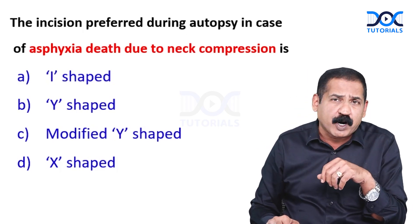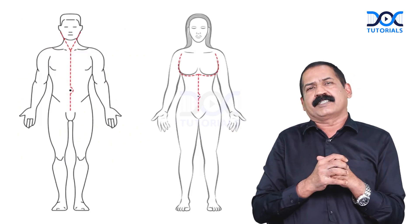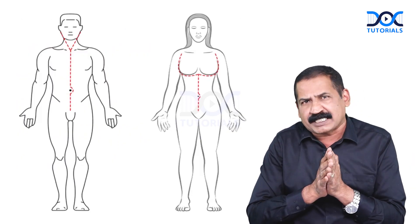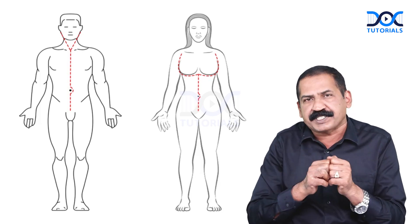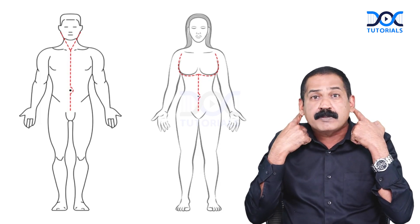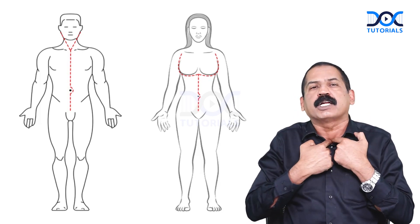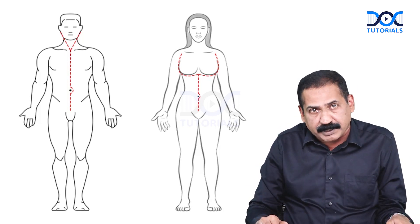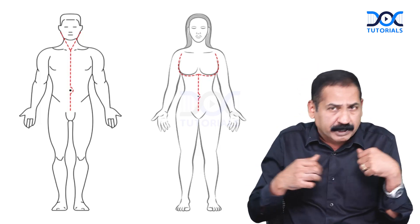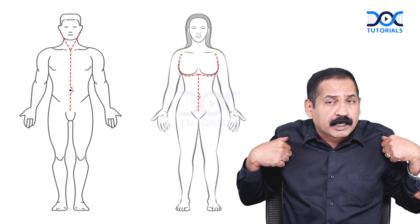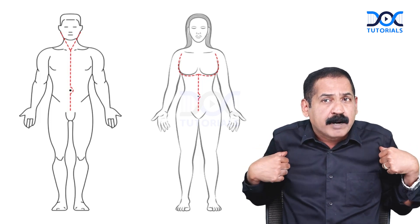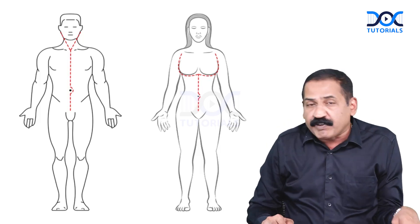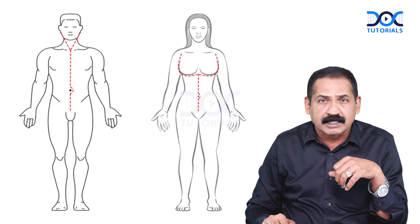Now, what about Y-shaped and modified Y-shaped? In a male, the Y-shaped incision runs from both mastoids behind the ear to the suprasternal notch, then down to the pubic symphysis avoiding the umbilicus. In females, the incision runs from both acromion processes below the breast to the xiphisternum, then down to the pubic symphysis avoiding the umbilicus.